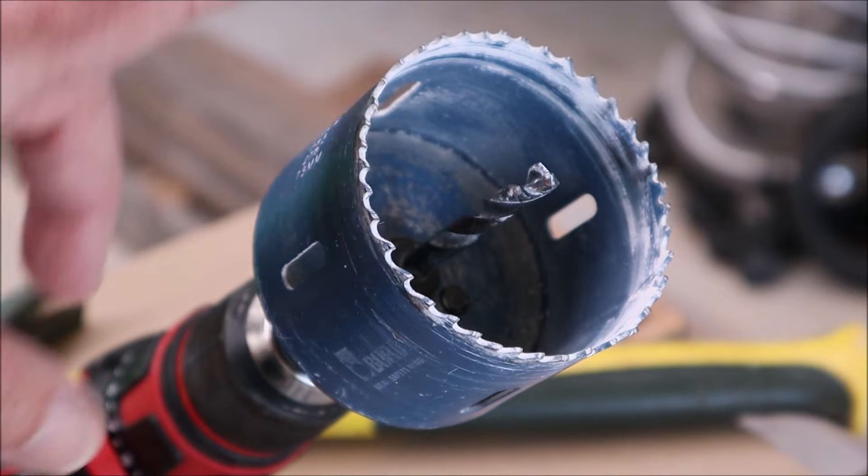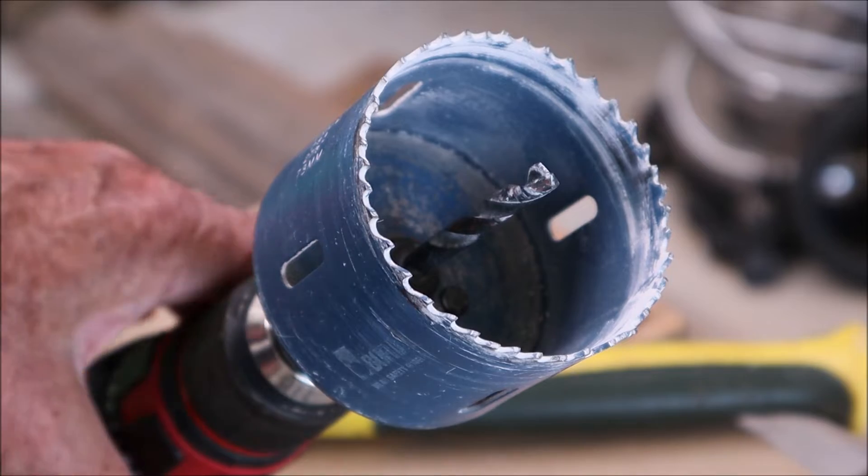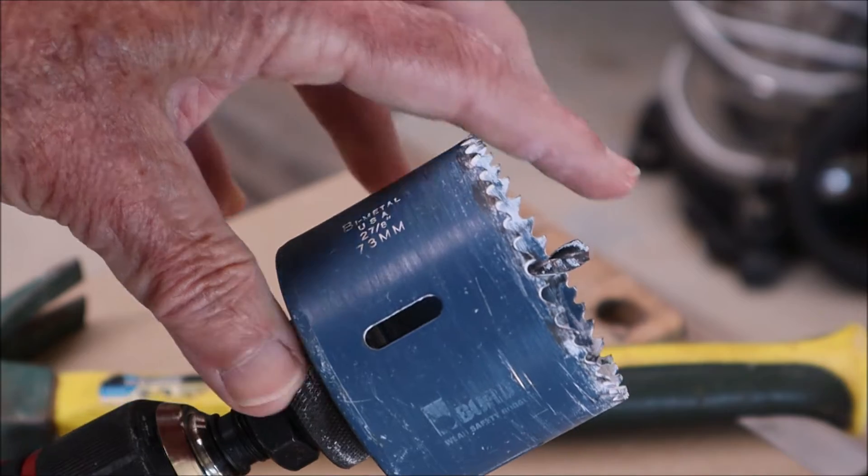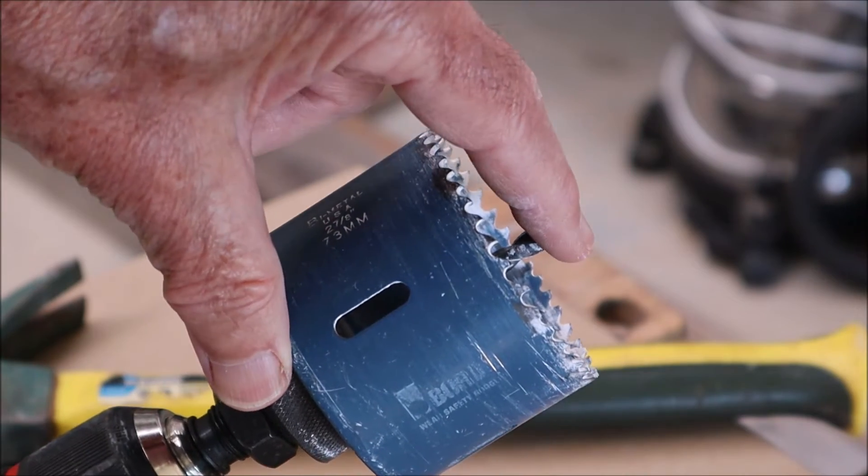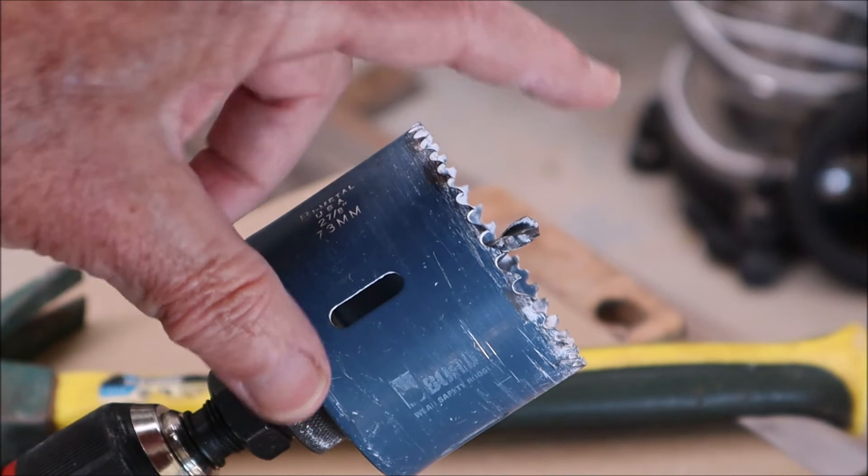If you look from the side you'll notice that the drill bit is slightly ahead of the cutting teeth of your hole saw, so that goes in first.